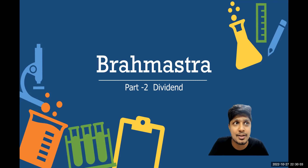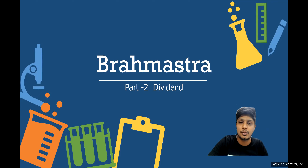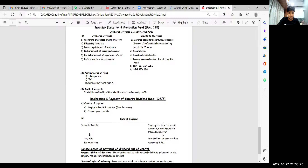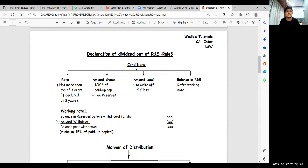If you are trying to give dividend from reserves, here are the conditions. First: the rate at which dividend is paid from reserves should not exceed the average of the last three years. Second: the amount withdrawn from reserves can never exceed one-tenth of your paid-up capital and free reserves. Third: the amount withdrawn should be used to write off losses of the current financial year. Fourth: the balance in the reserves account after withdrawing should be at least 15% of your paid-up capital.